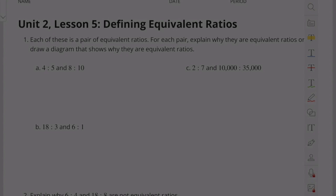Unit 2 Lesson 5, Defining Equivalent Ratios. Each of these is a pair of equivalent ratios. For each pair, explain why they are equivalent ratios or draw a diagram that shows why they are equivalent ratios. Problem A: 4 to 5 and 8 to 10.